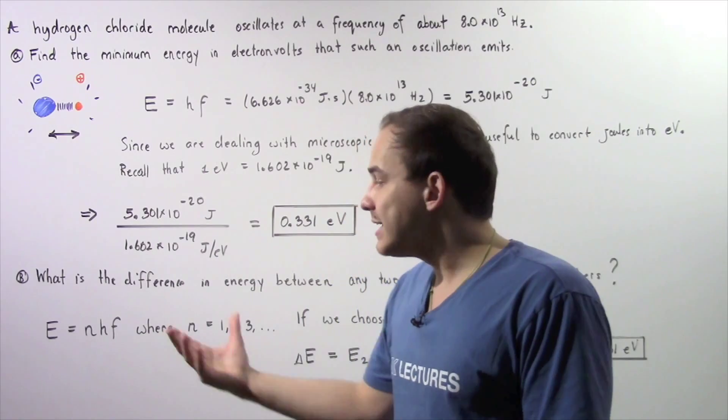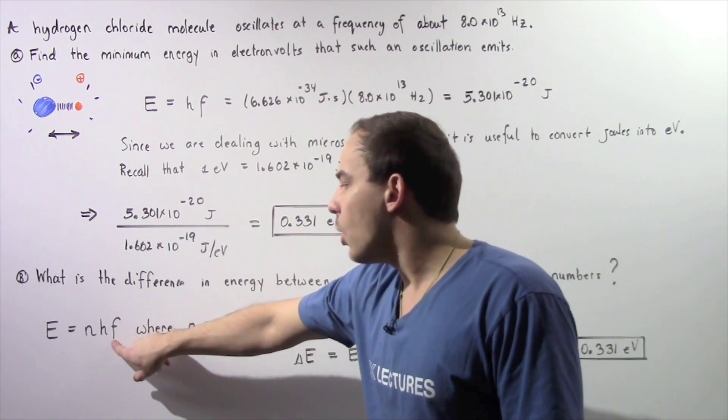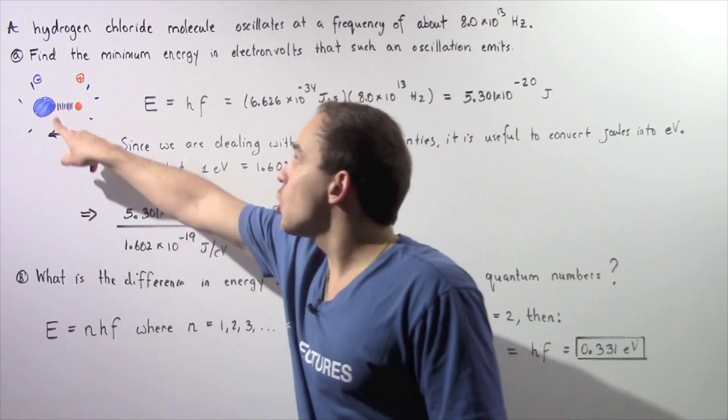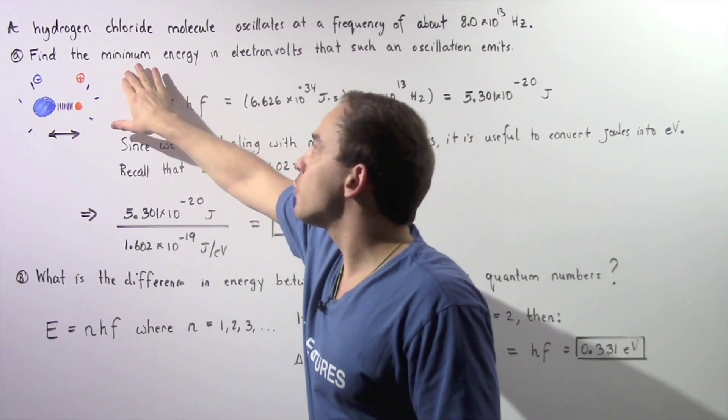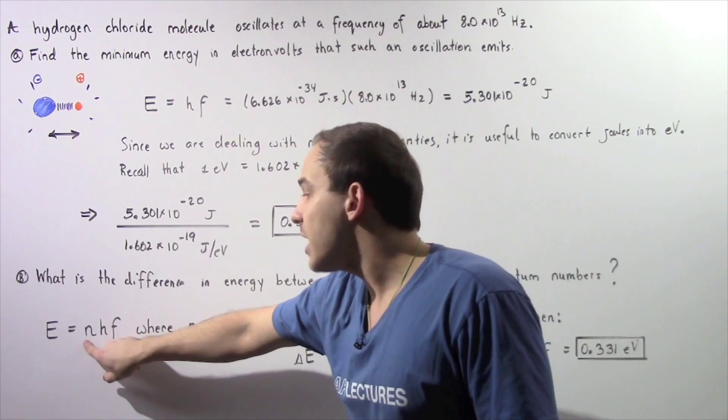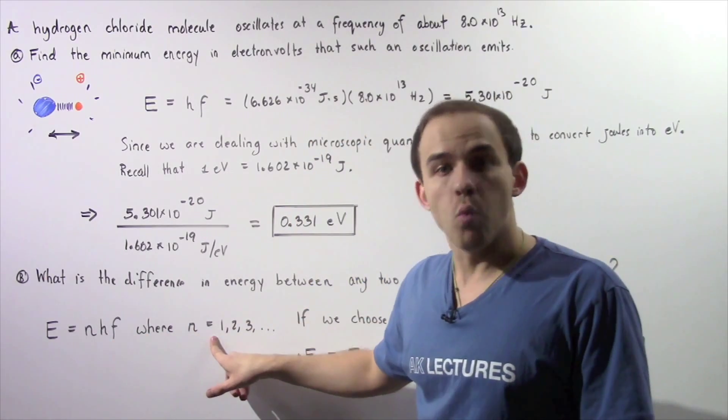So, E, the energy, is equal to N multiplied by H multiplied by F. So, in Part A, we were looking for the minimum energy, so the quantum number N was equal to 1.